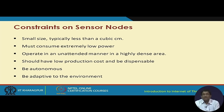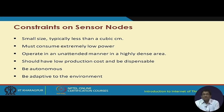The sensor nodes are typically small in size, low power, and resource-constrained in all different ways. Due to their small size — typically in the order of a few cubic centimeters — they must consume extremely low power. They must operate in an unattended manner, be produced at low cost, be easily dispensable — perhaps a couple of dollars or a few hundred rupees — and be autonomous and adaptive to the environment in which they operate.